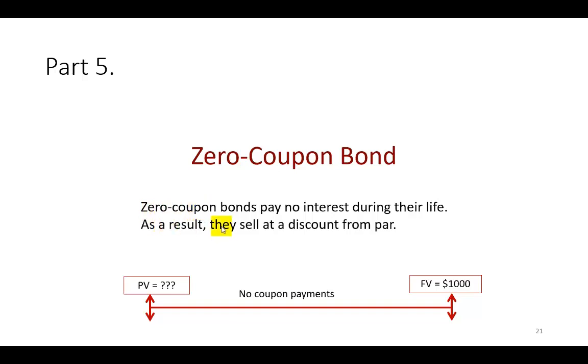And as a result, they're going to have to sell at a discount from par because the par value is a thousand. So if you're not going to receive any coupon interest payments in the interim right here, then for sure you wouldn't want to pay any amounts more than what you're going to get at expiration of the bond. And so the value of the bond that we're going to be calculating right here would be below a thousand dollars.